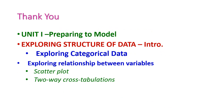So far, we have seen exploring categorical data from the first unit, preparing to model, under the topic exploring structure of data. In this class, we have seen what categorical data is and exploring relations between variables using two different plots: the first is scatter plot and the second is two-way cross-tabulation. In the next class, we will see another important topic for the first unit.